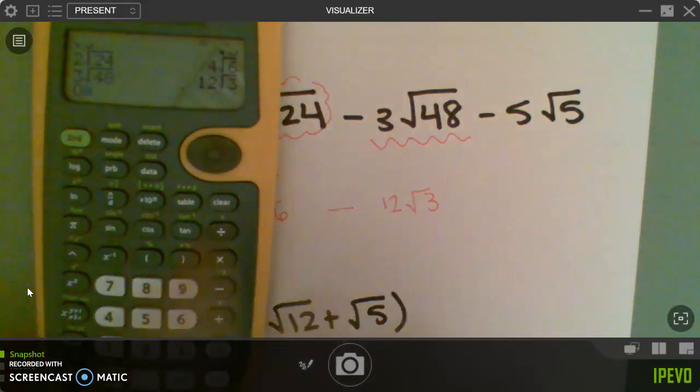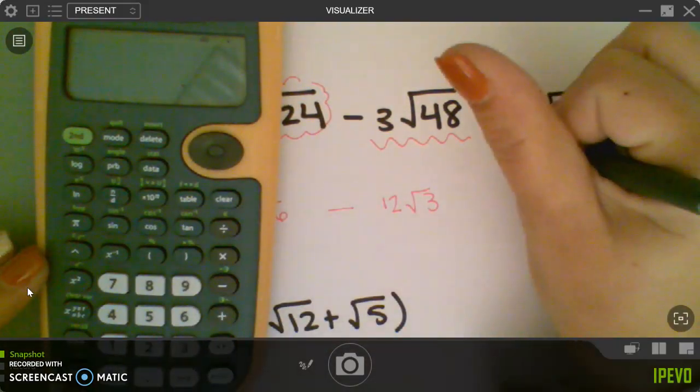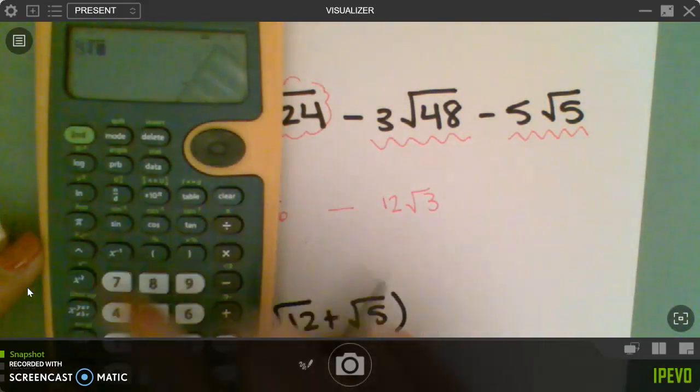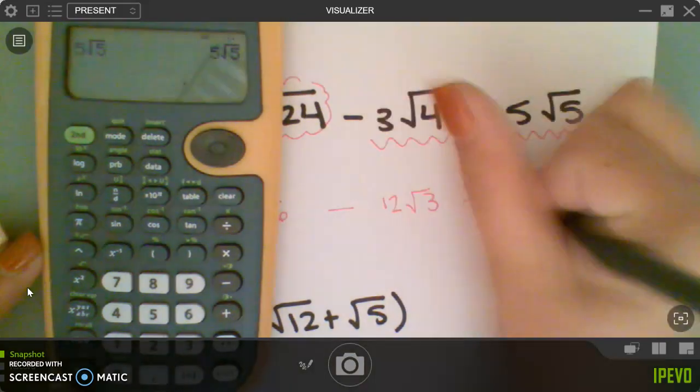And lastly, let's try and do the 5 root 5. So 5 square root 5 is just 5 root 5.